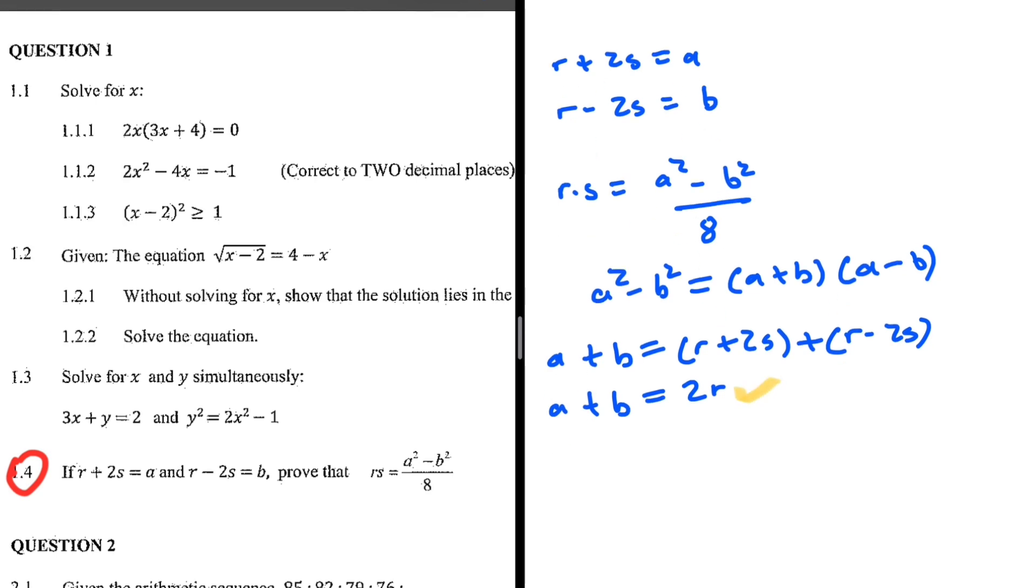Right, and then now let's figure out what a minus b is. And then this is going to be r plus 2s minus (r minus 2s). So let's take a look: a minus b will be equals to r minus r, which gives us 0, and then 2s minus minus 2s will give us 4s. So there we go, we have a minus b which equals 4s.